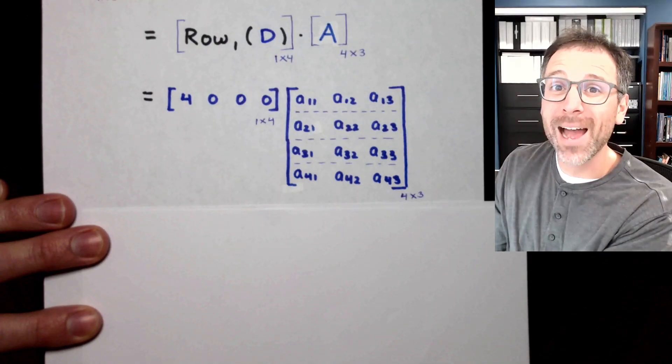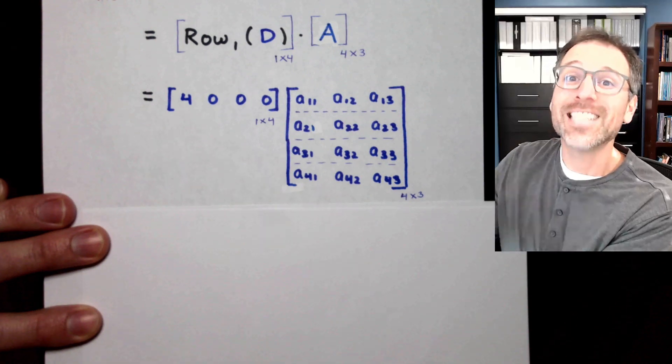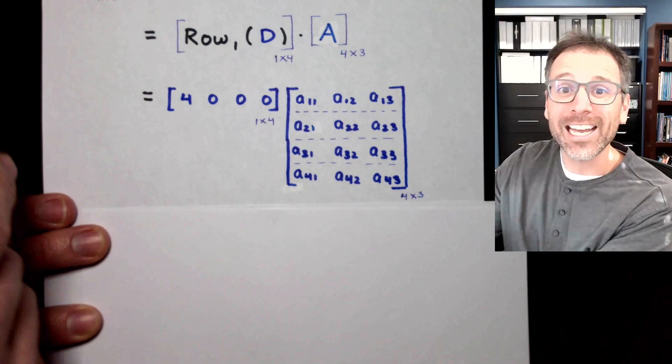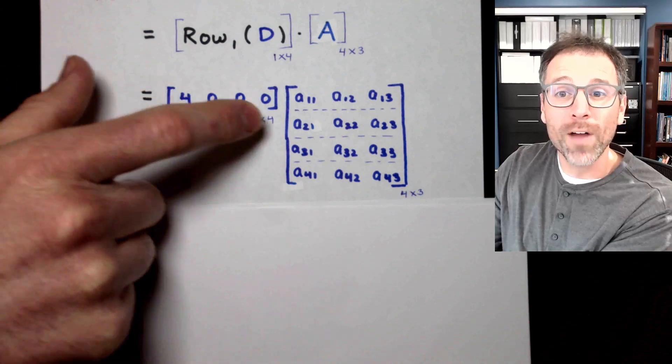Test yourself again. Remember the best way to remember math is to do active recall. Test yourself, make mistakes, correct them, and iterate. So what's the definition of row vector matrix multiplication?